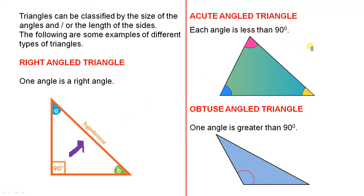The next triangle is called an acute angled triangle. Here we have a triangle where each angle is less than 90 degrees. You can see quite clearly just by the diagram that each of those angles is less than 90 degrees, but when you add the three of them up, you have 180 degrees.